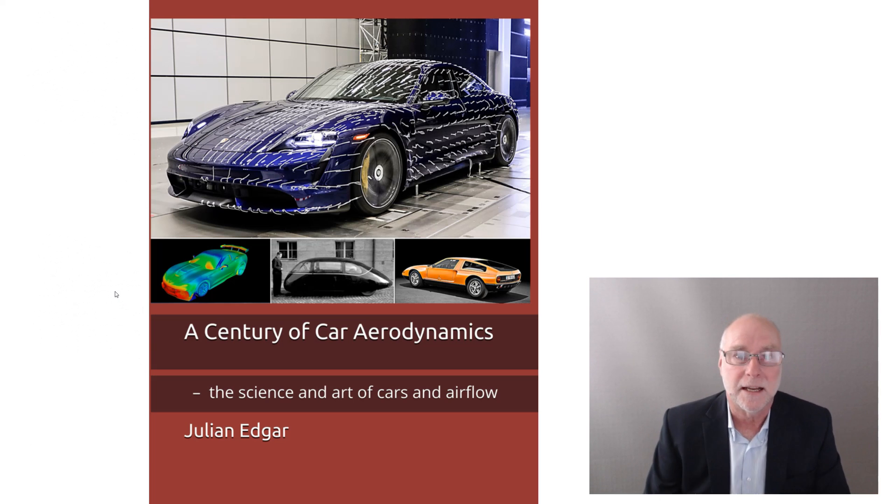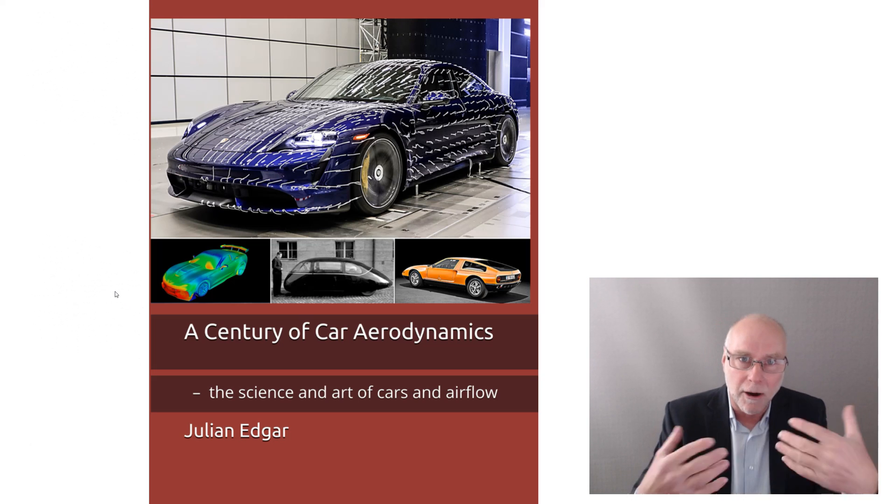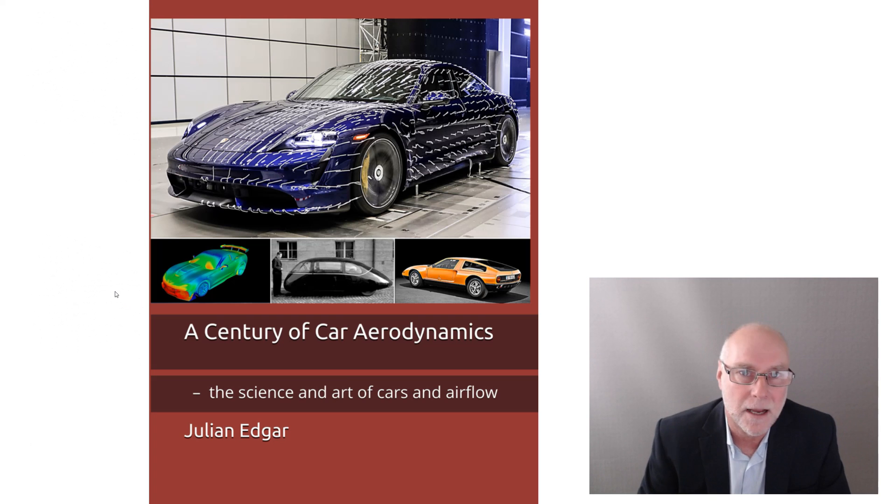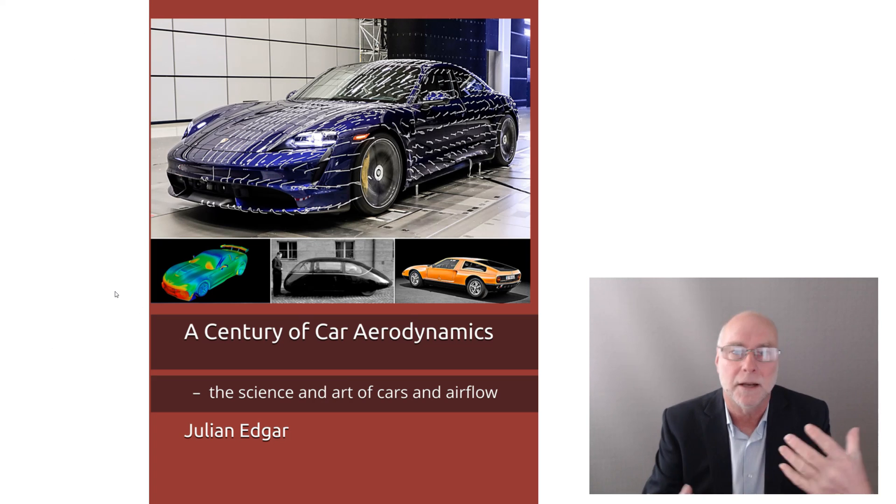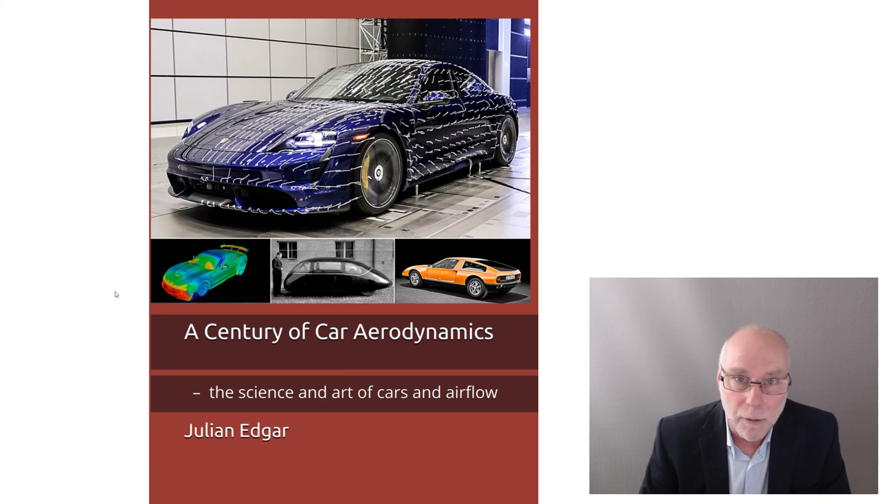It's all in my book, A Century of Car Aerodynamics. I go right back to the 1920s, come right forward to the current day, Porsche Taycan, for example. And I look at all the significant aerodynamic developments on cars, including where we want lower drag and also where we want lower lift. The book's out now. It's available from Amazon in all countries. Thank you.